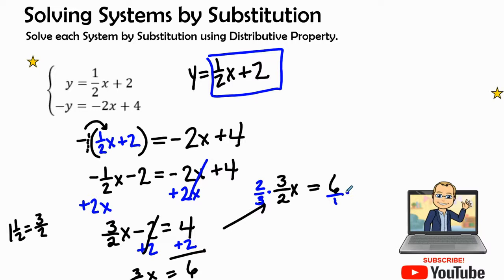This is going to be 6 over 1, so when I multiply it by 2 thirds I can just multiply the numerator by numerator and the denominator by denominator. The 2s cancel out, the 3s cancel out, leaving me x by itself. That's the reason for multiplying by a reciprocal. Then 6 times 2 is 12, 1 times 3 is 3, so 12 divided by 3 is x equals 4.